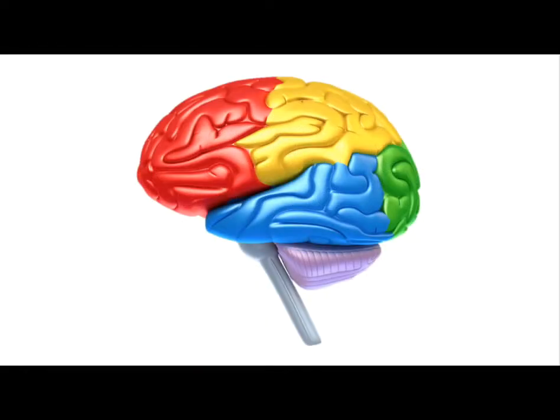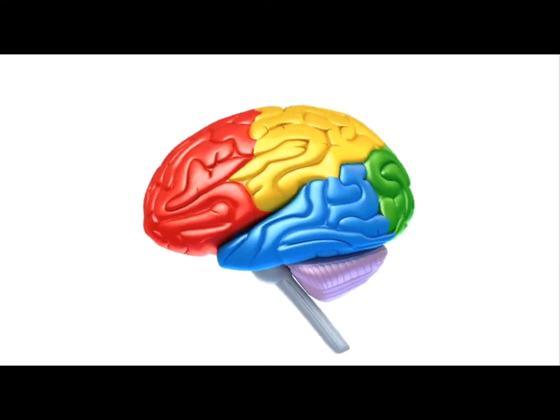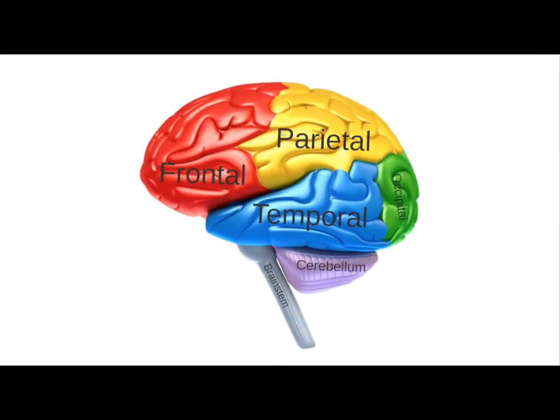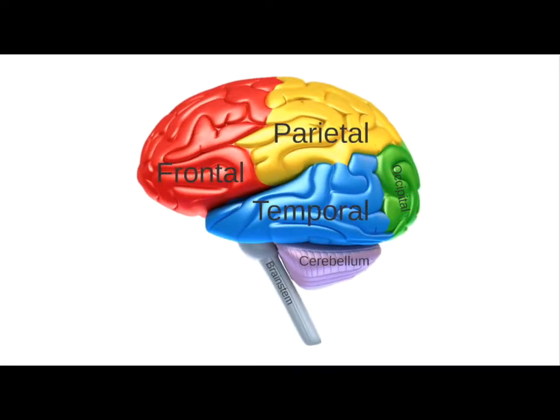Let's talk about the brain, the regions of the brain, and how an injury of any of these regions might impact a person's functional and cognitive abilities. To start, we have to look at the brain in various different lobes. In red we have frontal, in yellow we have parietal, in blue we have temporal, in green we have occipital, in purple we have cerebellum, and gray brainstem down below.